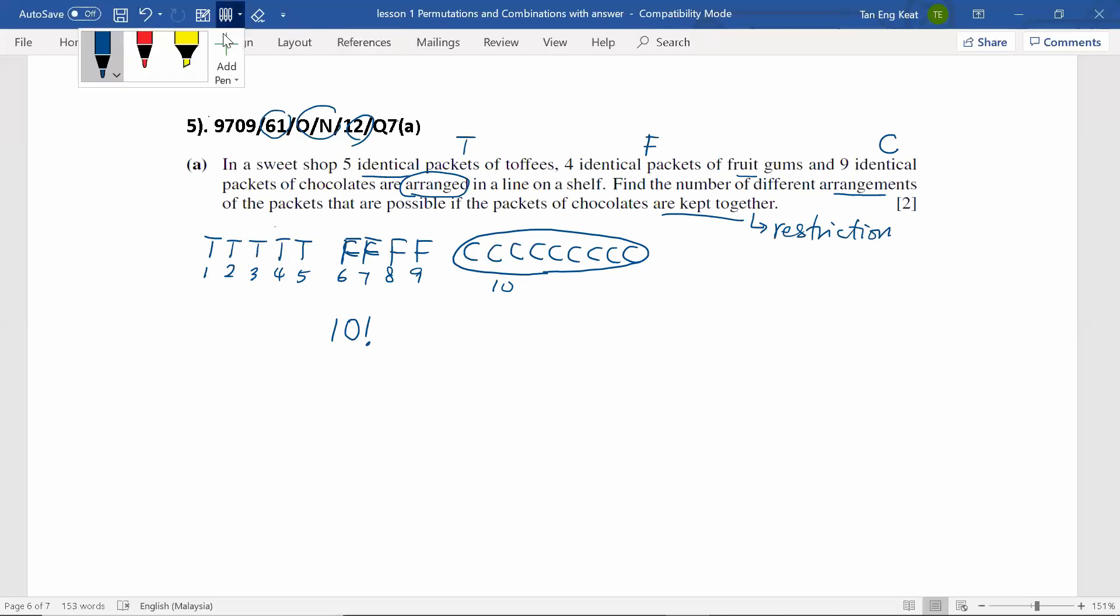And for the nine packets of chocolates, when they are arranged with the rest of the packets, they can still arrange among themselves. And there are nine packets of chocolates. Hence, it has nine factorial ways for them to be arranged. So, multiplication rule, we multiply them together.